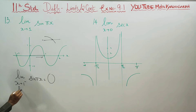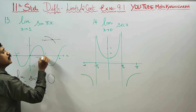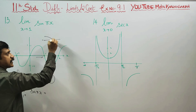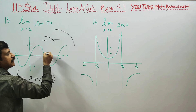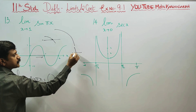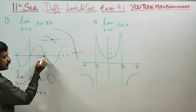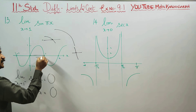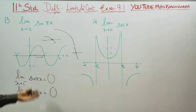Now for the right limit: limit as x turns to 1 plus of sin(πx). From 1 plus, we take values like 1.0000001 — very close to 1 from the right. When you produce this on the graph, you meet the curve. Producing from the right direction, you also meet the graph. It's very clear from the graph itself.